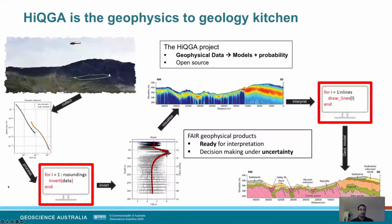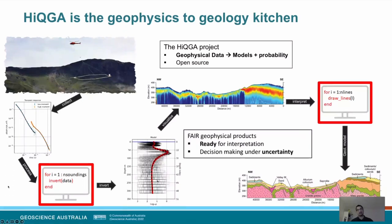That red model over there is actually a property of the earth — that's resistivity with depth — so now we're beginning to look into the earth in the depth dimension. However, there's uncertainty associated with that, shown as the fuzzy black lines in the background, what we like to call swarm plots. Wherever the fuzz is darker, that's more certain, and as we get deeper, it's less certain. But this is at only one location, and what we have to do then is perform this at all the locations that the helicopter or aircraft flew over, to visualize a section.